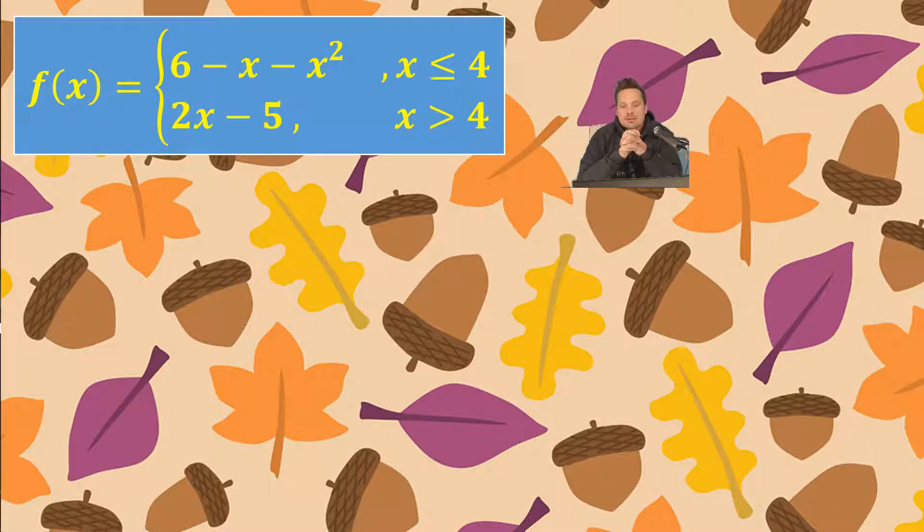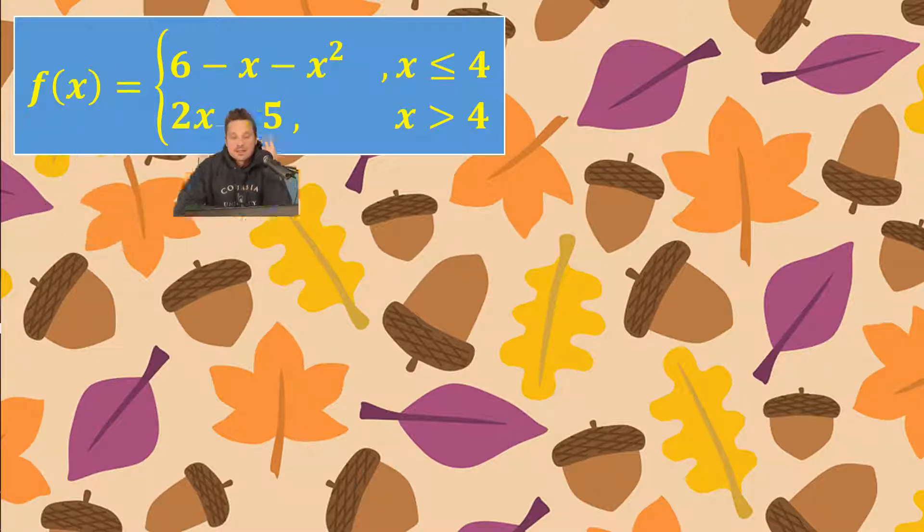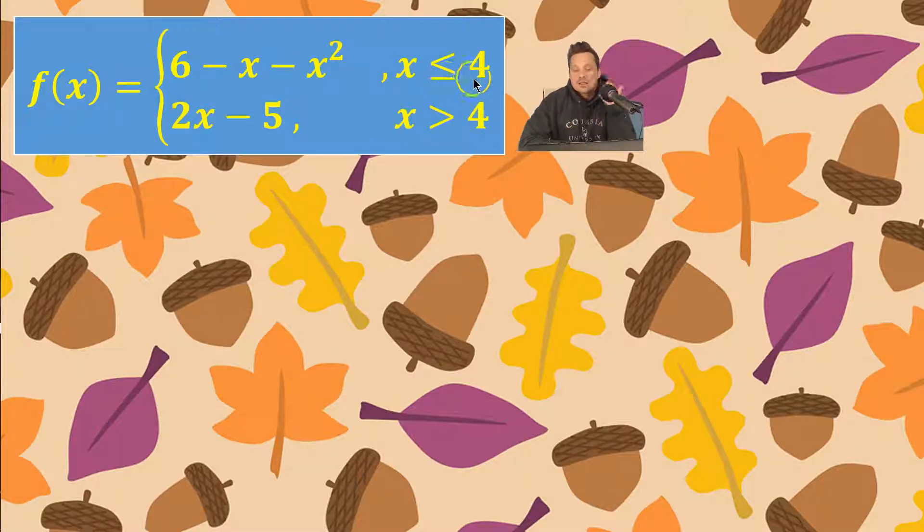Hello one and all and welcome to the Math Magic Show. In this one we're going to find a limit. I have here a piecewise defined function that says f of x equals 6 minus x minus x squared. This piece applies when x is less than or equal to 4.